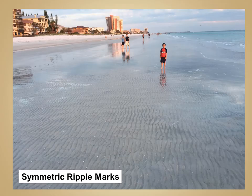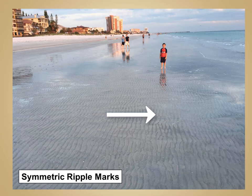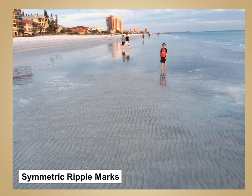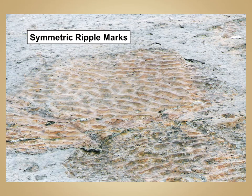Wave-caused ripple marks are formed from an alternating current where the wave runs up the beach and then runs back down. This back-and-forth motion creates a ridge with symmetric sides — we call this symmetric ripple marks. If this sediment is quickly buried and then lithified, these symmetric ripple marks can be preserved on the top of the bedding plane, as shown in this photograph.